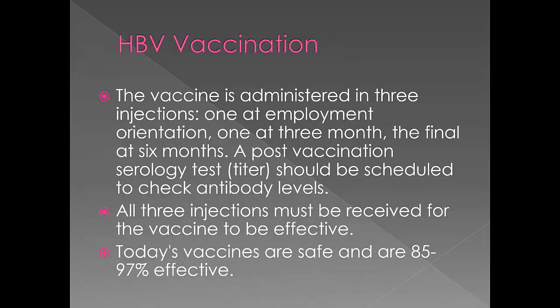The hepatitis B vaccination is administered in a three-part injection: one typically at employment orientation, one at three months, and the final one at six months. A post-vaccination serology test, or titer, should be scheduled to check the antibody levels. All three injections must be received for the vaccination to be effective. Today's vaccines are safe and are 85 to 97 percent effective.